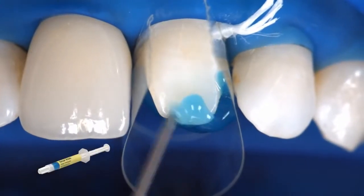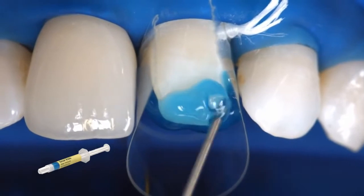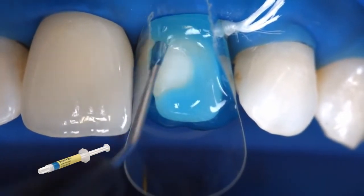Apply phosphoric acid gel, for example Total Etch, to the enamel and allow it to react for 15 to 30 seconds.